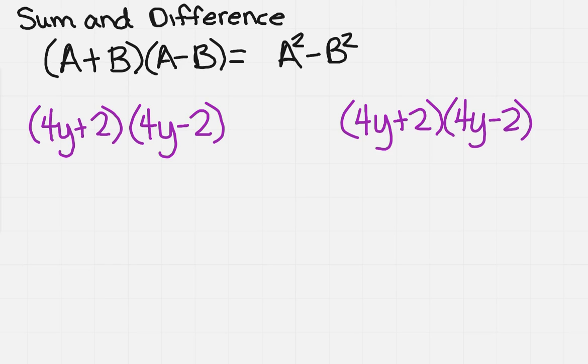So if I look at the left, I want to apply the rule that is right above it. So it says I'm going to take the first term and I'm going to square it, minus the second term squared. So 4 times 4 is 16, so I get 16y squared minus 4.